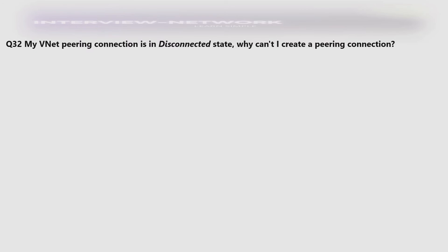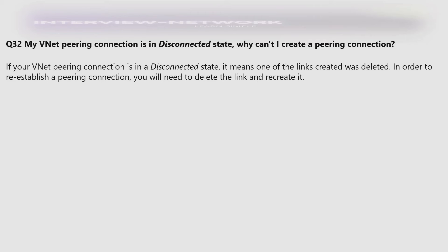My VNet peering connection is in a 'Disconnected' state — why can't I create a peering connection? If your VNet peering connection is in a disconnected state, it means one of the links created was deleted. In order to re-establish a peering connection, you will need to delete the link and recreate it.